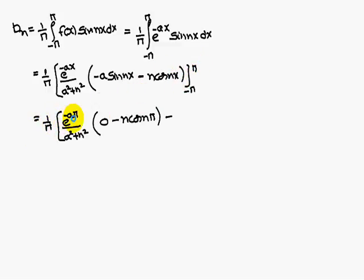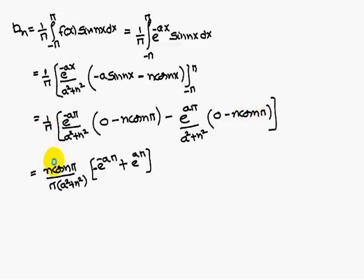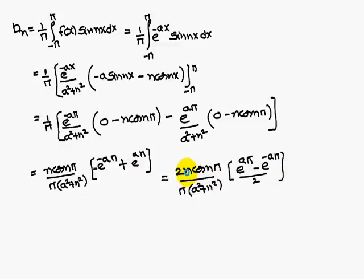Substituting the upper limit: 1 by pi, e power minus a pi by a square plus n square, this gives 0 minus n cos n pi. Substituting the lower limit: e power a pi by a square plus n square, this value is 0 minus n cos n pi. Taking n cos n pi common, and a square plus n square common, what we are left with is e power minus a pi plus e power a pi. Multiplying with 2 and dividing with 2, this value is nothing but hyperbolic sine a pi. Not n pi — this is hyperbolic sine a pi.